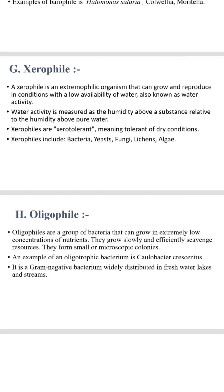Oligotrophs are a group of bacteria that can grow in extremely low concentrations of nutrients. They grow slowly and efficiently, scavenging resources, and form small microscopic colonies. An example of an oligotrophic bacterium is Caulobacter crescentus, a Gram-negative bacterium widely distributed in freshwater lakes and streams.